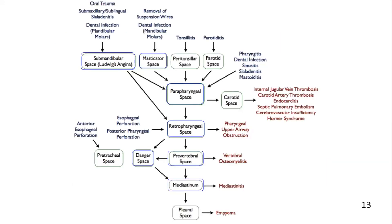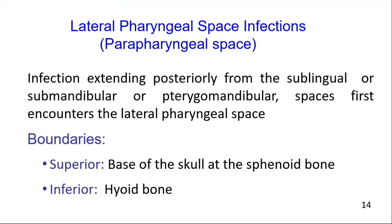This is the flow chart showing the spread of the infection. Infections may spread from the submandibular or masticator space to the lateral pharyngeal space, and from here to the deep neck spaces, and finally may enter the mediastinum. Any extension posteriorly from the pterygomandibular, submandibular, or sublingual spaces will lead to involvement of the lateral pharyngeal space.